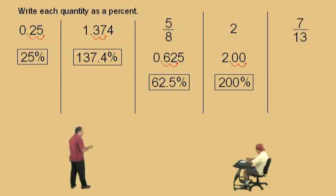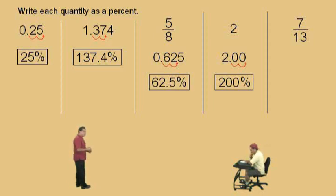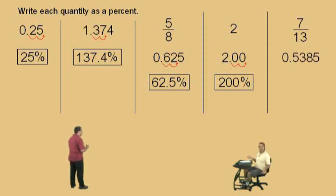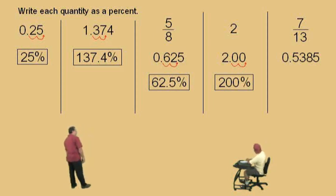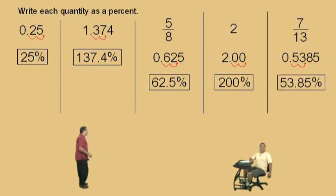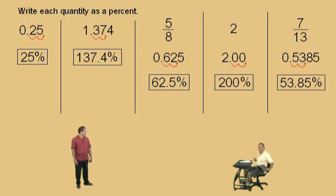Here we have 7 thirteenths. Now here, we're going to have to use some rounding off. We're going to round off to the nearest ten-thousandths — that's four decimal places. So take 7 and divide by 13, Charlie, and what do you get? 0.5385 — rounded to the nearest ten-thousandths. There you go, Charlie. Now where do we move the decimal? Move right. That's right, so that gives us 53.85%, and notice our percentage is rounded to the nearest hundredths. Very nice there, Charlie! So that's a good introduction to percents. Let's keep on going — we'll see you again soon!